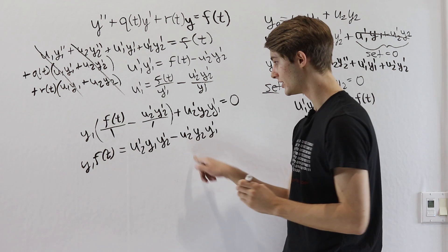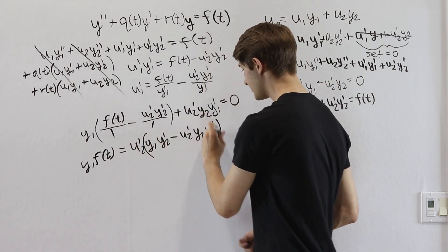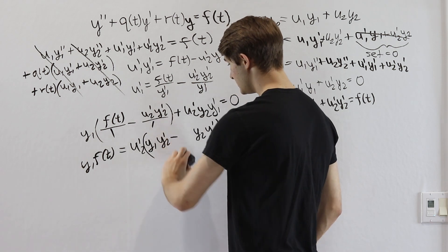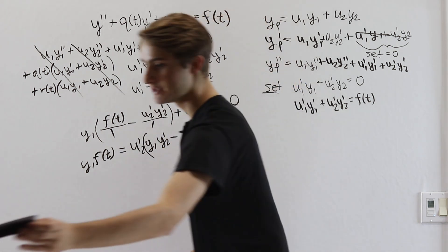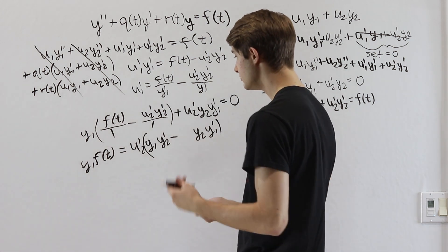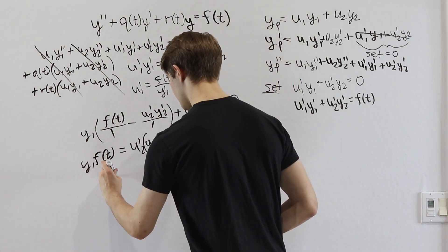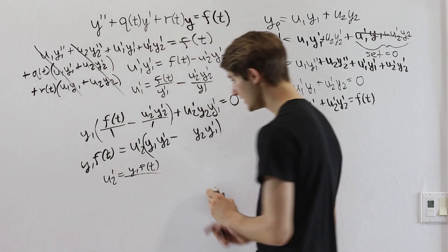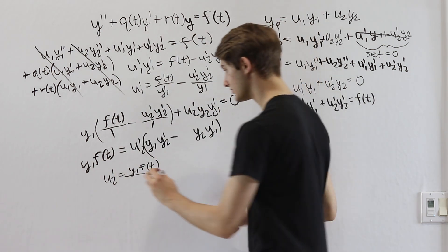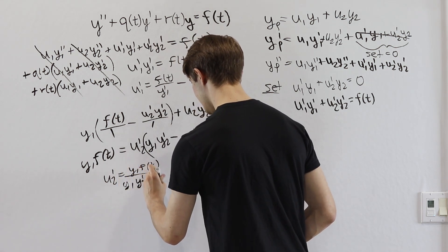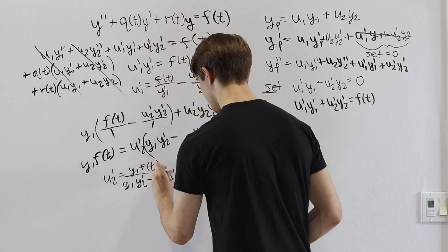So now notice we have u2 prime in everything. We can factor that out. And our last step is just going to be to divide out this term that we have here. So now when we solve for u2 prime we will get u2 prime equals y1f(t) divided by whatever we have on the right side here. So y1y2 prime minus y2y1 prime.